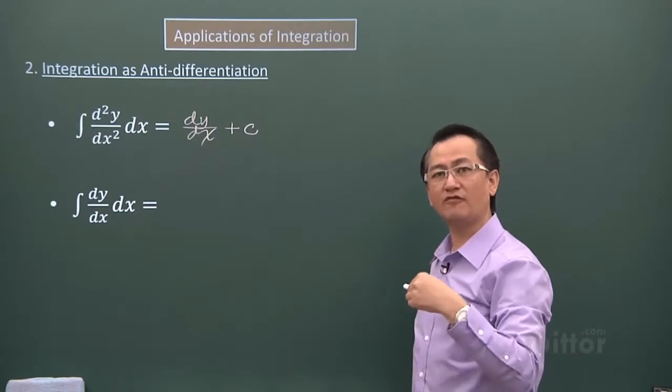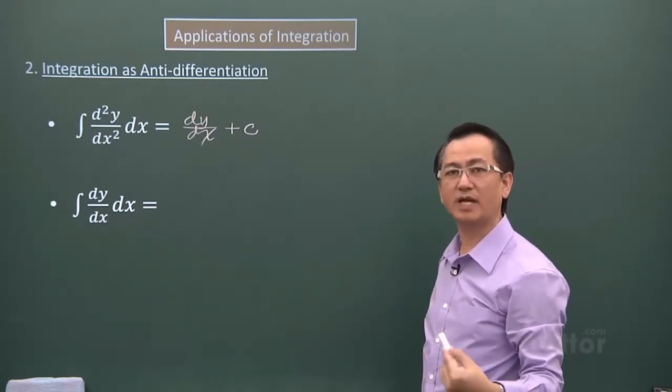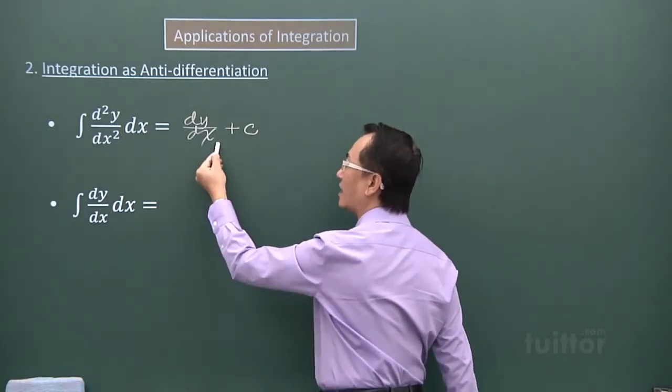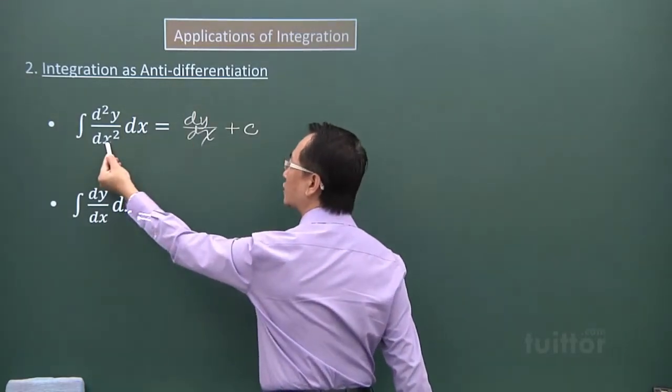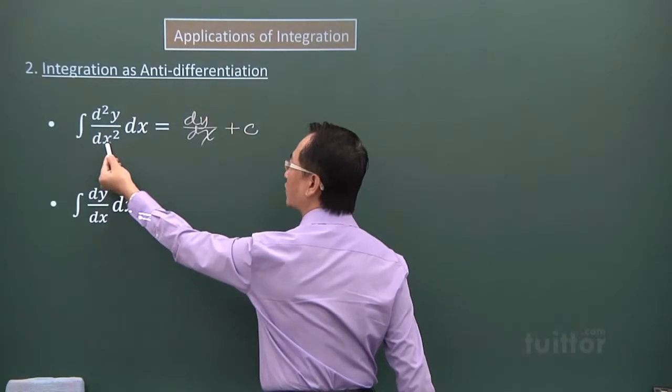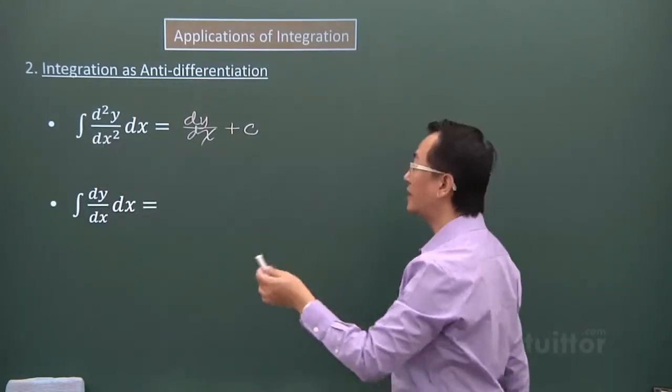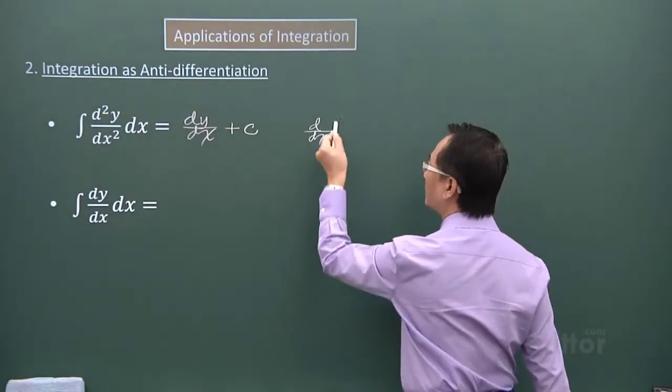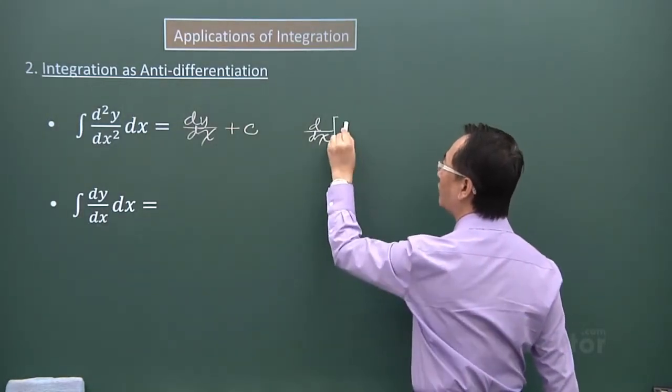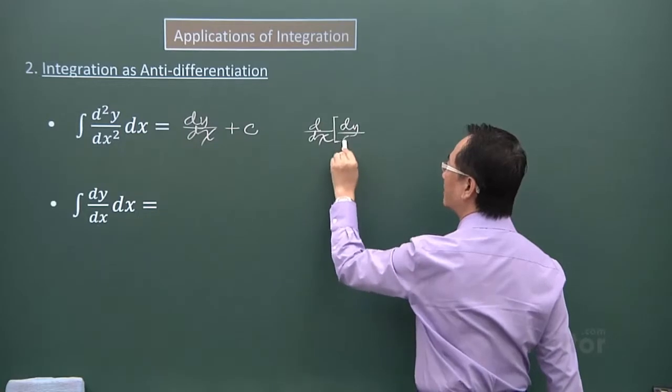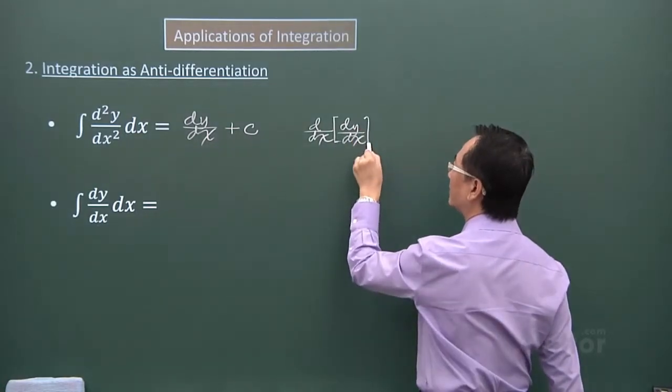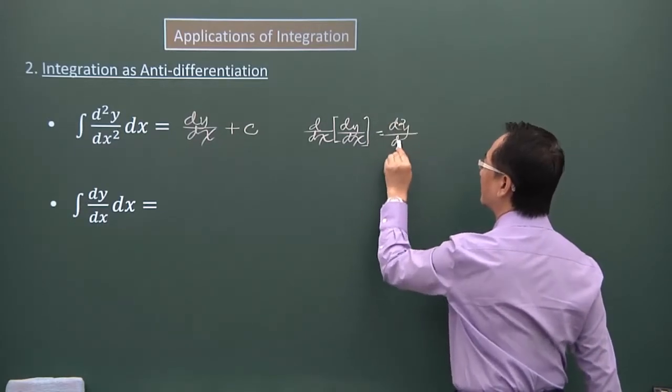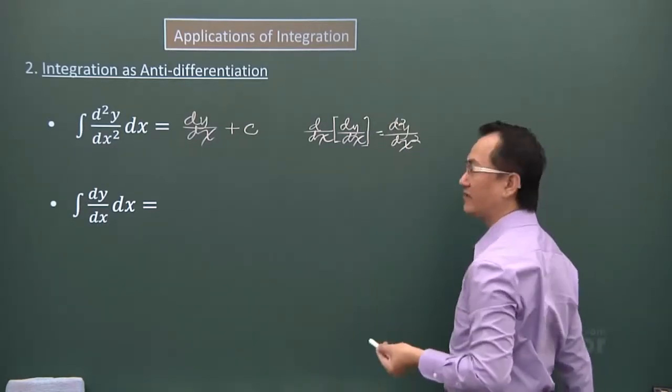So if you differentiate with respect to x of dy over dx, then you will get d squared y over dx squared. Let me write it for us. If I just differentiate with respect to x of the first derivative, then I will get my second derivative.